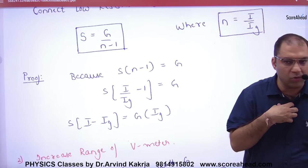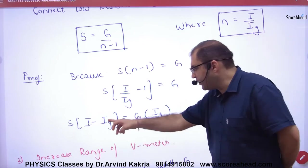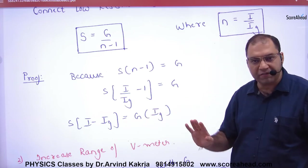So in our course, when we discussed last time in the lecture, we remembered this formula: shunt formula - IG into G upon I minus IG.